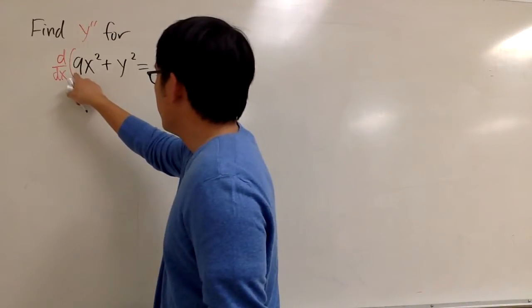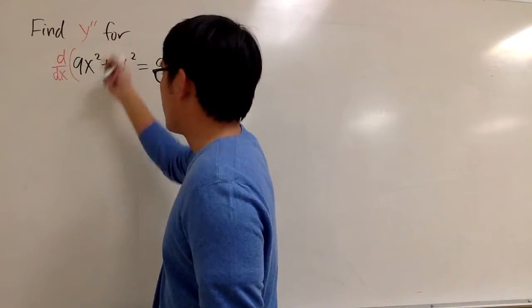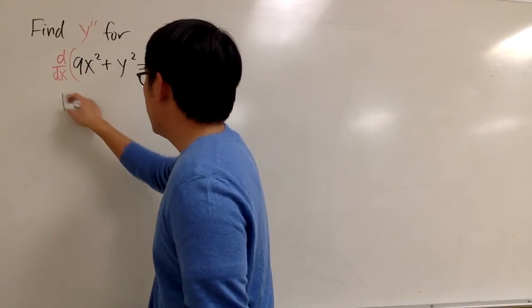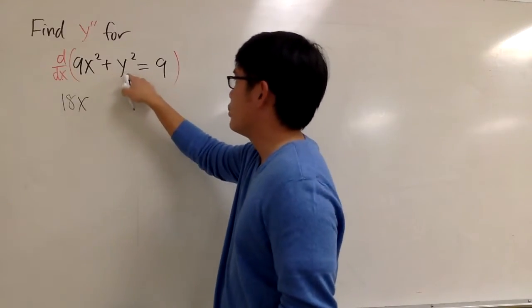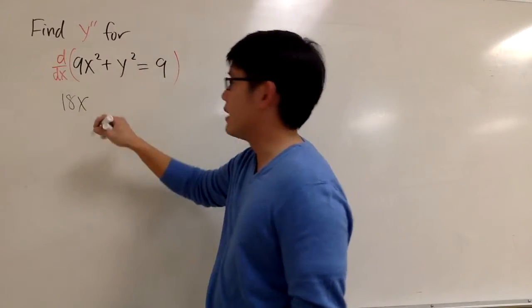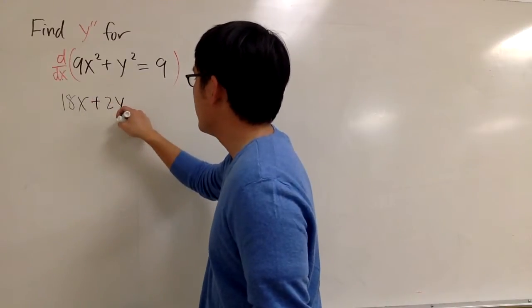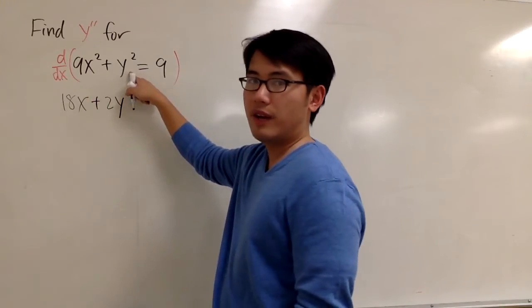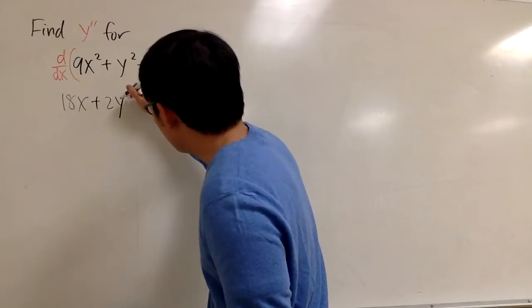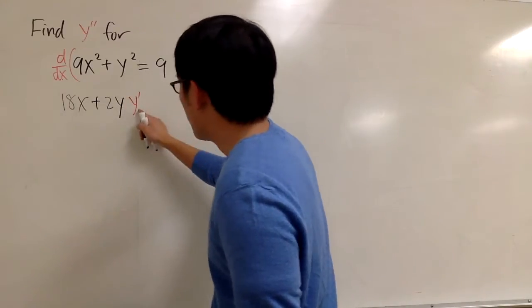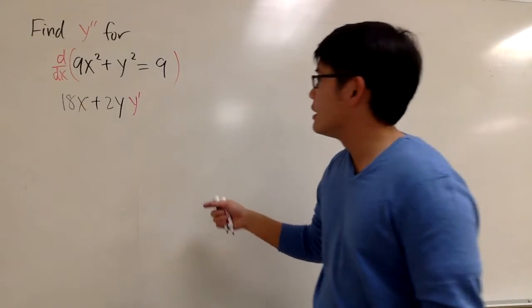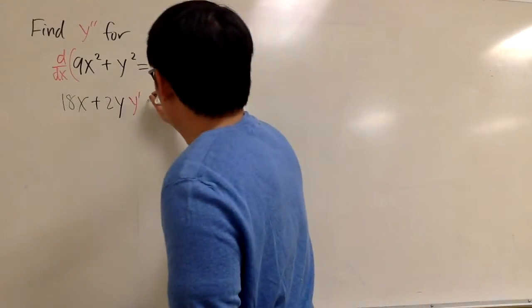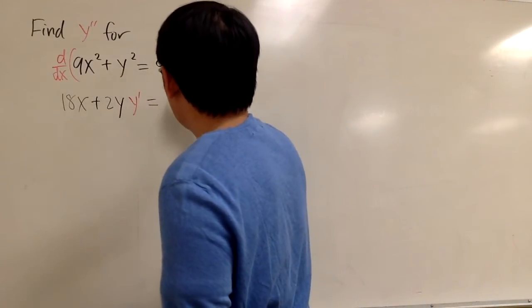Okay, to begin, 9x², you just do the power rule, so the derivative of that is going to be 18x. And then to take the derivative of y to the second power, you bring the 2 to the front, so plus 2y. But then y is a function of x, so we will have to multiply by the derivative of y, namely y' or dy/dx. And that will be equal to the derivative of 9, which is 0.